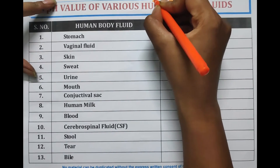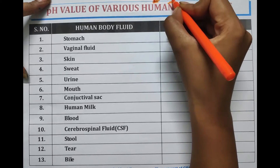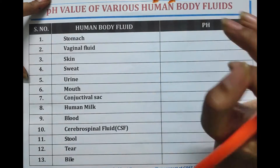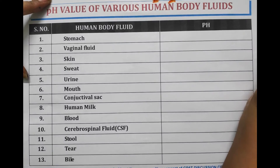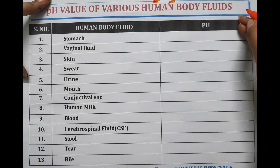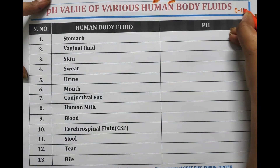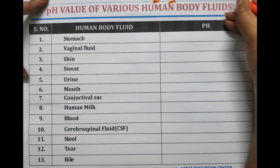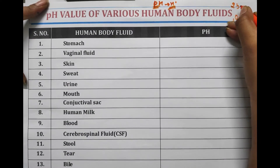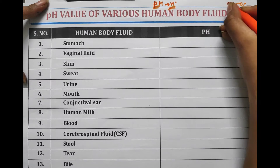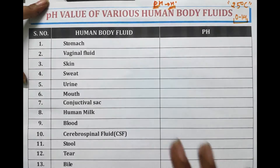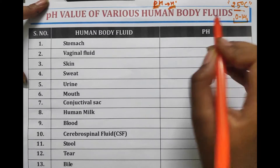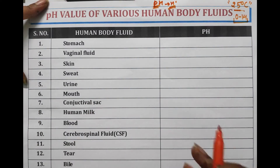pH is the measurement of hydrogen ion concentration — a measurement of acidity or alkalinity of a solution. The pH scale usually ranges from 0 to 14. pH measurement is particularly done at 25 degrees Celsius. Aqueous solutions at 25 degrees Celsius with a pH less than 7 are acidic.